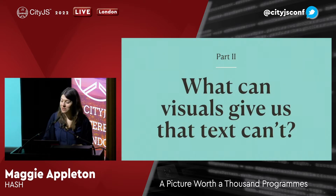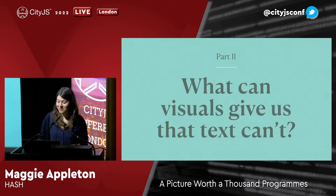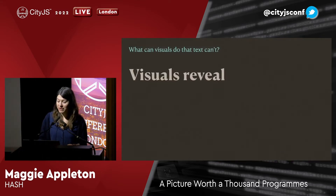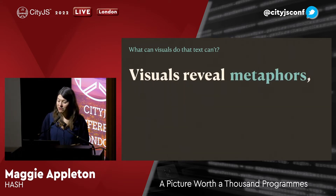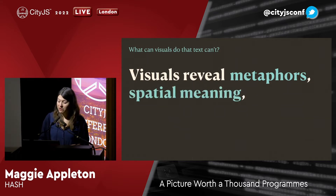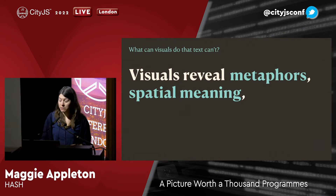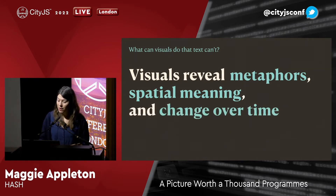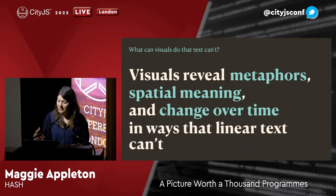So I've started to hint at what we're going to look at in part two — what can visuals offer us that we can't get from linear text? I think visuals reveal three aspects of programming that we're unable to see in text. They reveal fundamental metaphors embedded in our programming languages. They reveal spatial mappings that we use to reason about how our programs are structured and how data moves through them. And they reveal how our programs and data behave over time. These things are all implicit in the programs we write, but they're not explicitly shown in the medium of linear text.